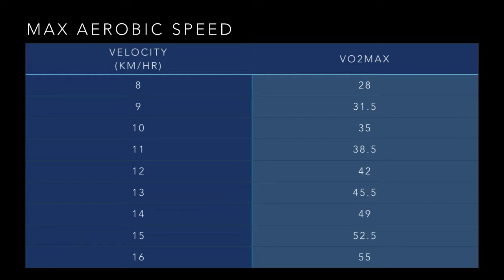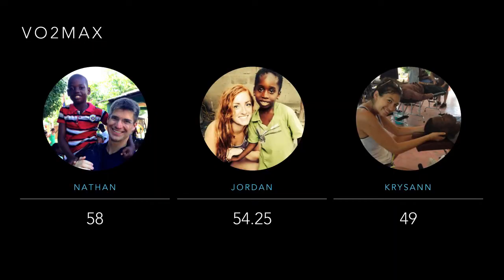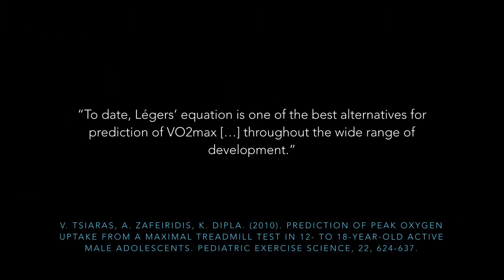Here's a chart showing velocity on the left and the comparable VO2 max on the right. We decided to run this ourselves — one of us had an MAS of 14, the last step they were able to complete, and using that equation, VO2 max was 49. Here are our VO2 maxes calculated from the simple treadmill test. The use of MAS allows you to determine the different training needs of each athlete; the three of us would not be able to train together at the same pace. Laguerre's equation is one of the best alternatives for prediction of VO2 max throughout a wide range of development.